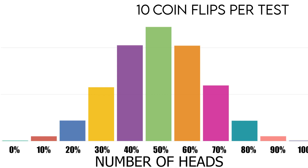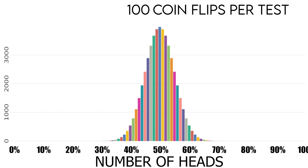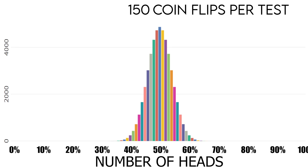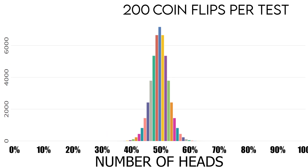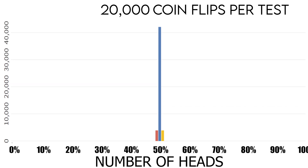If we increase the number of flips each time from ten flips to a hundred flips, you see how the bell curve gets more narrow. With a hundred flips, the lowest number of heads we got was 31% — we never got zero ever again. With a hundred and fifty flips, the lowest we got was 36%. And if we keep increasing the number of flips each test, the bell curve just keeps getting more and more narrow.